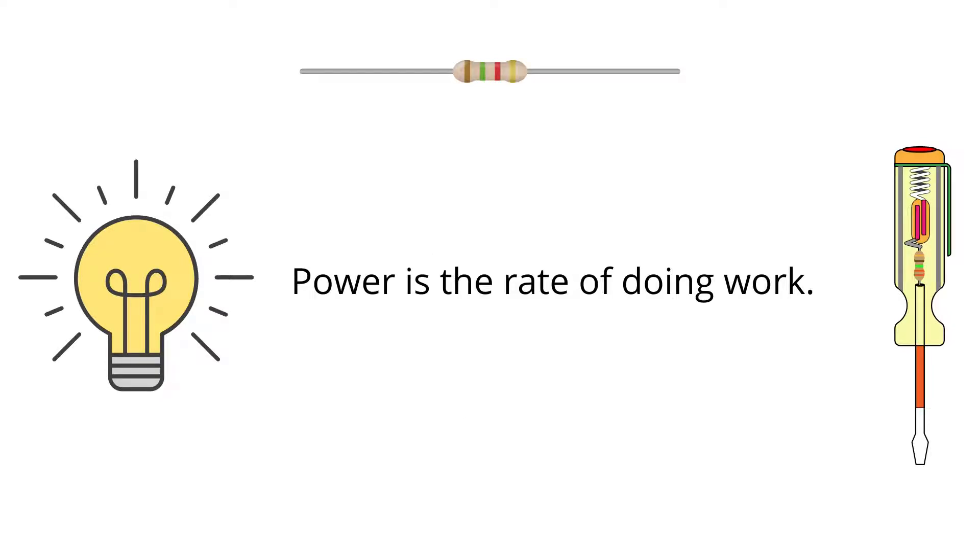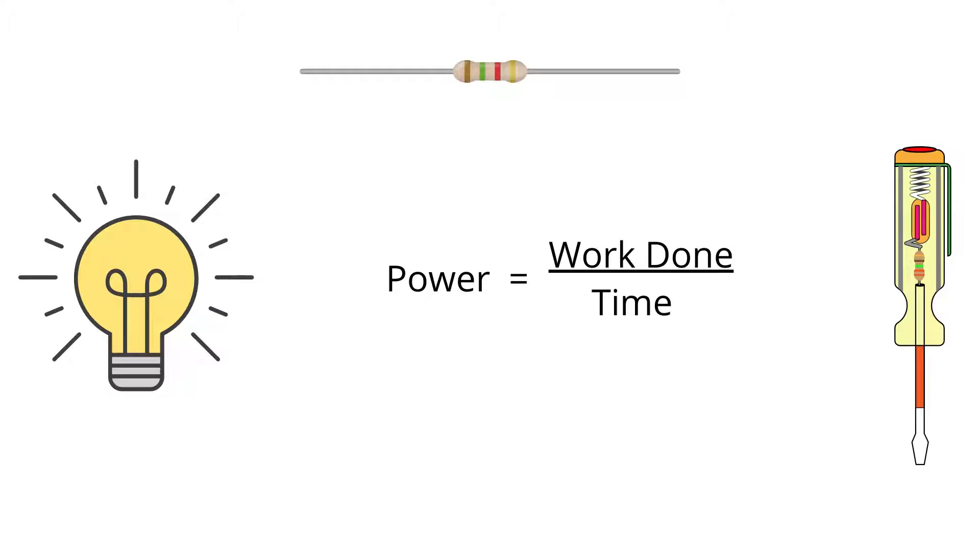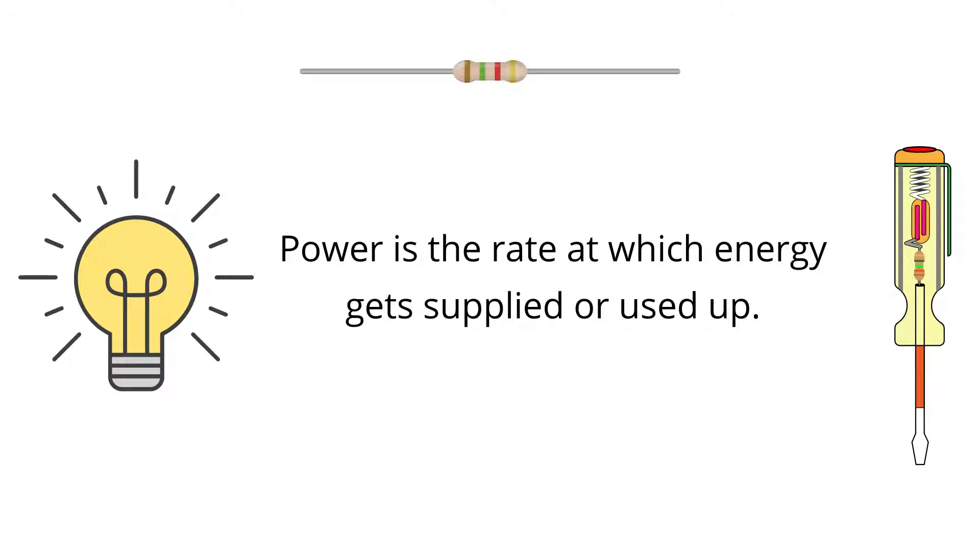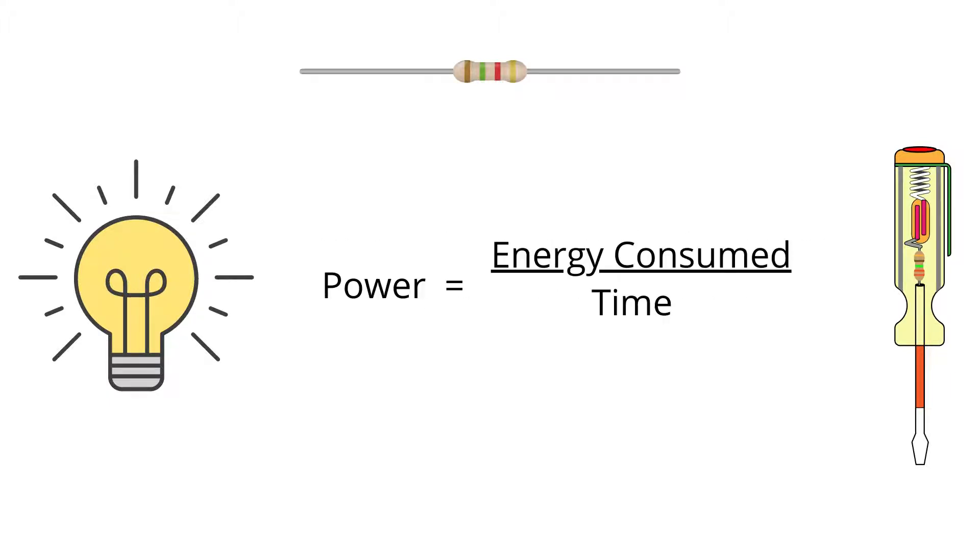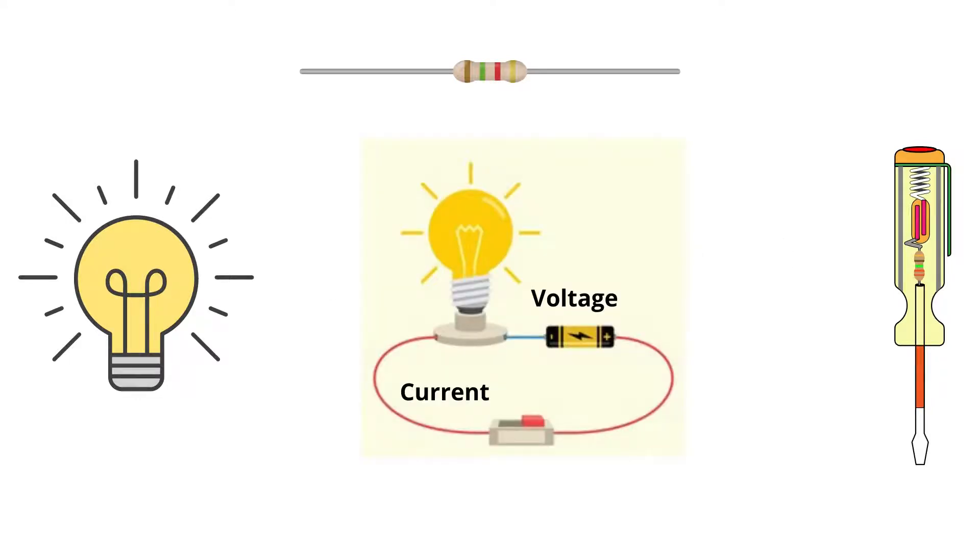It can be written as power equals work done divided by time taken. Since energy is used to do work, power can also be defined as the rate at which energy gets supplied or used up. We can write it as power equals energy consumed divided by time taken.